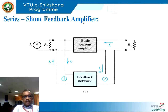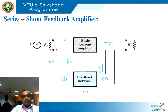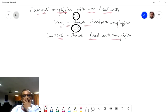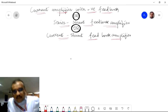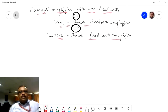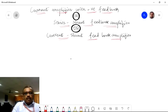Now let us move on to the next kind of feedback: the series-shunt feedback amplifier, also called a current amplifier or current-shunt feedback amplifier. We are familiar with this methodology. Let us derive the expression for the input and output impedances.